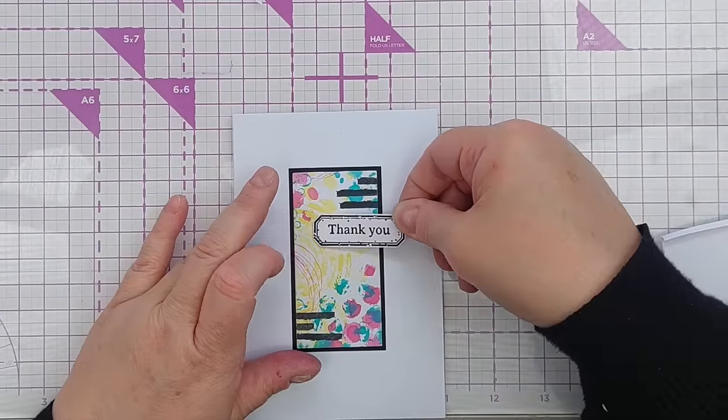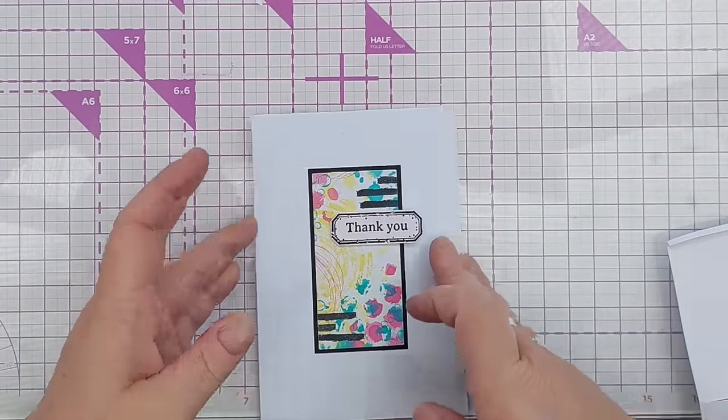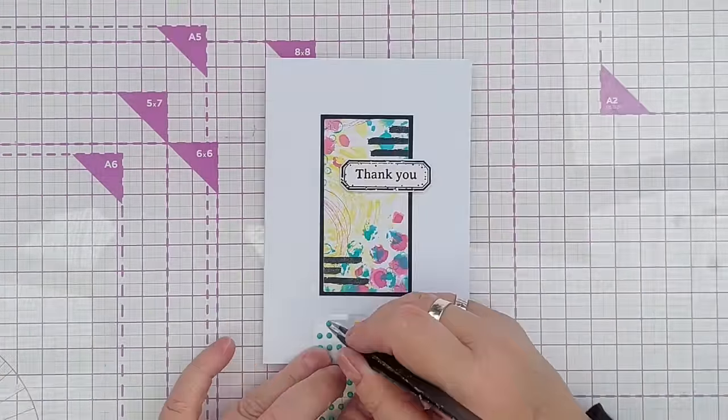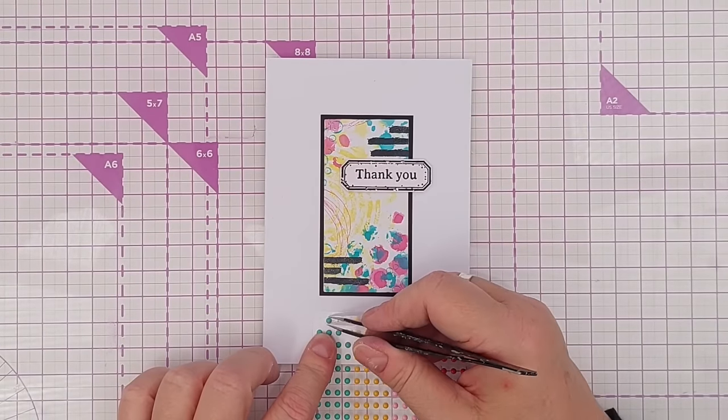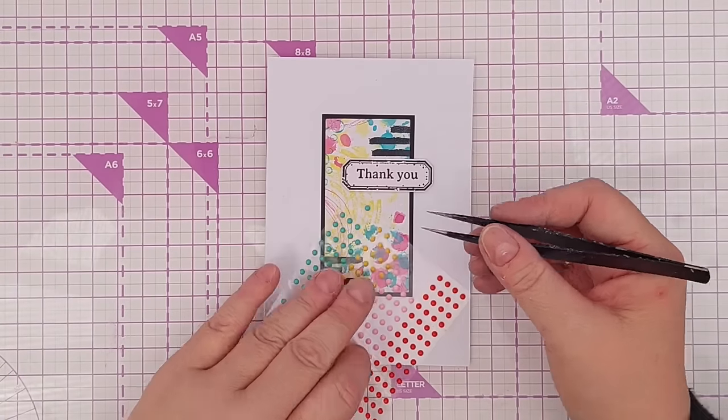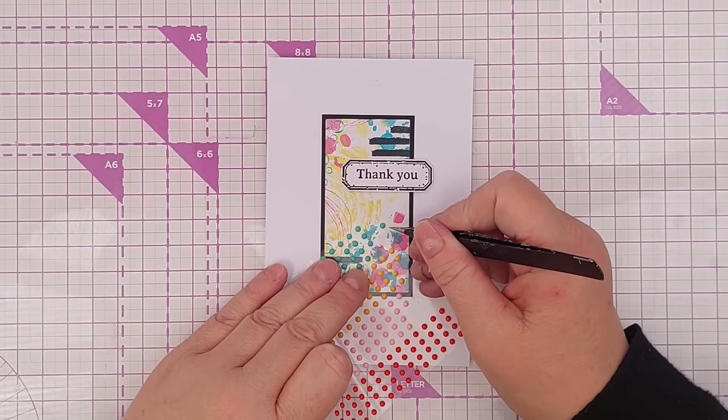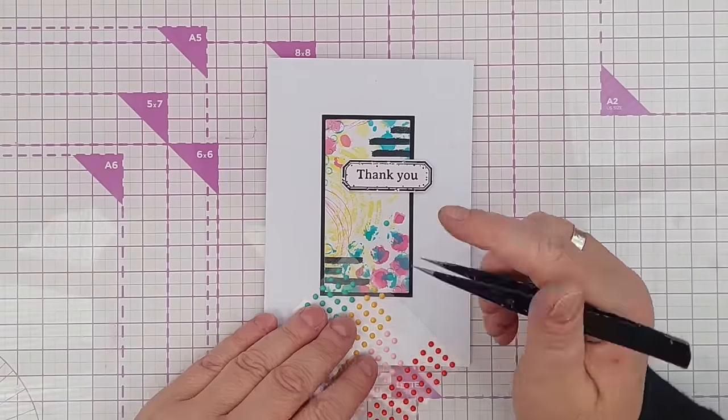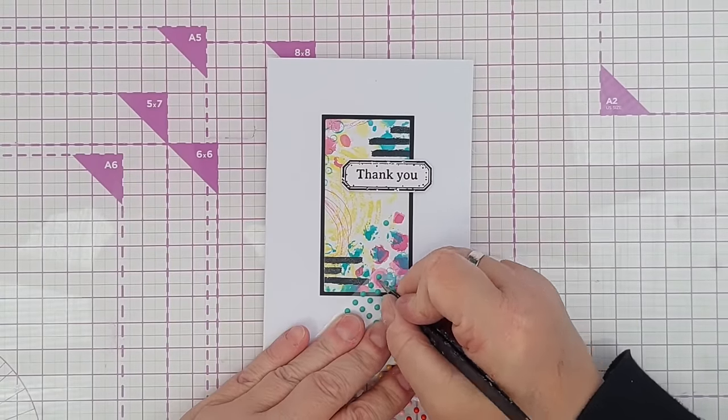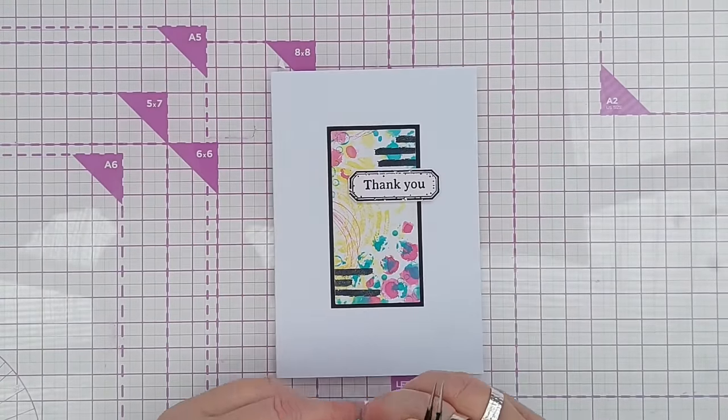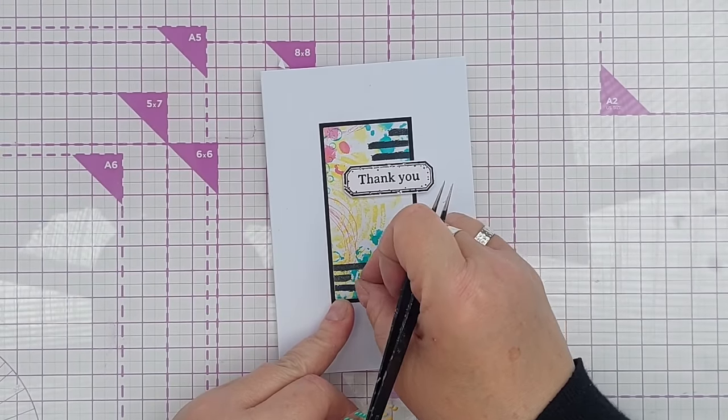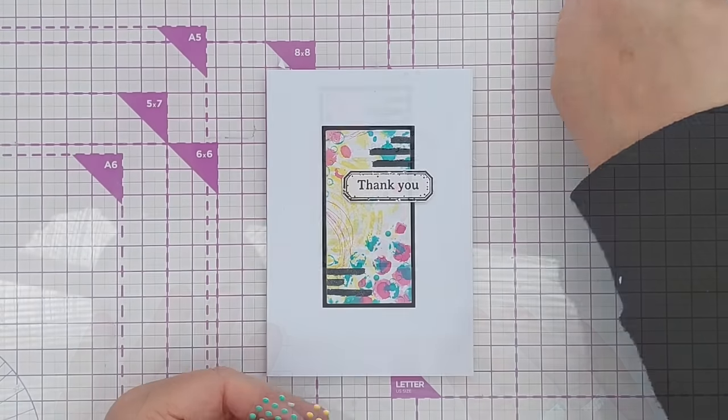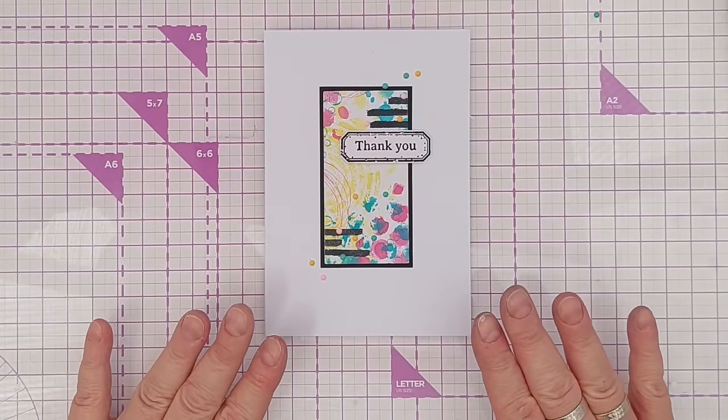And I think that will sit quite nicely just hanging off the side there. And here I've got some mini enamel dots, these are the only enamel dots I have now and I want to get them used. They're not quite the same colors as the distress oxides but they're close enough and I think I'll just dot a few in each color around the place. Maybe in a diagonal like that. There I think that will do I'm happy with that.